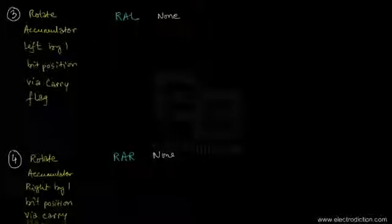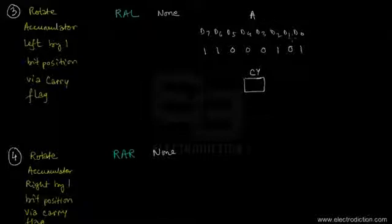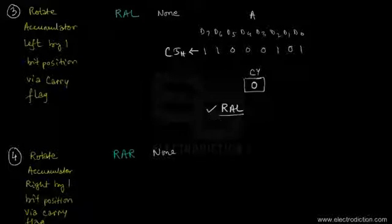Both RAL and RAR rotate the accumulator bits via the carry flag. For example, we have an accumulator data byte expressed in hex as C5H loaded in the accumulator. Let's say at this moment the carry flag is zero. When the RAL instruction is executed once — rotate accumulator left by one bit position via the carry flag — the accumulator bits transfer towards the left by one bit position.